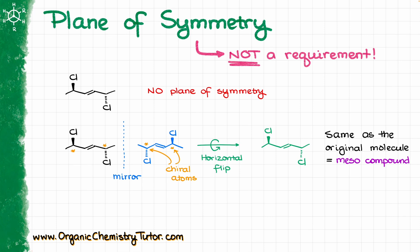So we can have meso compounds with an inversion axis rather than a plane of symmetry — that would be an element of symmetry, but that's not a plane. And the example of that is the molecule I have here on the screen. This molecule has an inversion axis and it doesn't have a plane of symmetry.